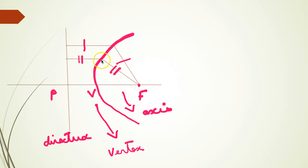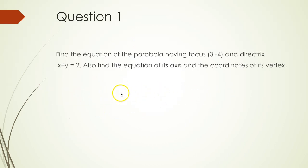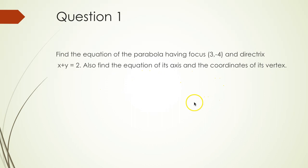If I take a point on the parabola, the distance of this point from the focus equals the distance of this point from the directrix. The same applies for any point on the parabola, and the vertex is the midpoint between the directrix and the focus. Question 1: Find the equation of the parabola having focus (3, -4) and directrix x + y = 2. Also find the equation of its axis and the coordinates of its vertex.